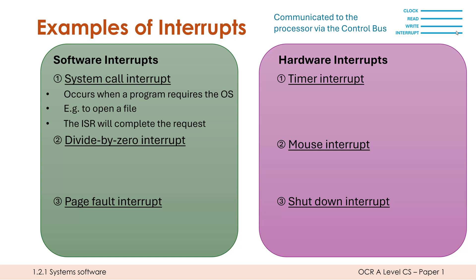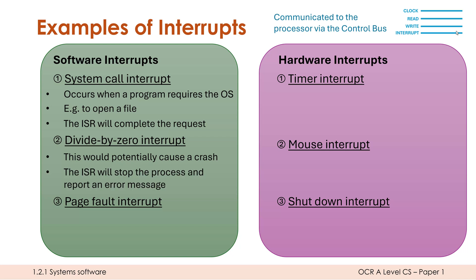Another example of a software interrupt relates to certain errors in a program. As you'll know from experience, there are lots of different errors which can occur — some are pretty safe, and some could cause a lot of trouble if they slip through the net. Dividing by zero is an example: you can't mathematically divide by zero. It could potentially cause a crash, produce erroneous results, or mean your ALU can't complete an instruction. So we want to stop these happening as soon as possible. Once the system detects you are about to divide by zero, an interrupt is launched, and the ISR stops execution and reports an error message to the user.